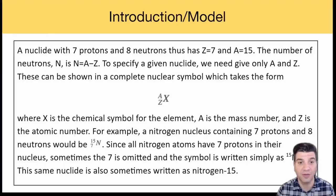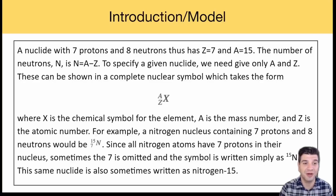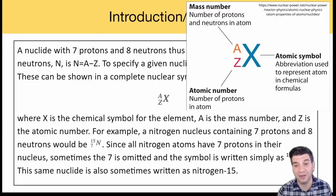A nuclide with seven protons and eight neutrons thus has a Z of seven and an A of 15. Remember, the Z represents the number of protons, the atomic number, which element it is—those are all the same thing. And A represents the mass number, which is just the number of protons plus the number of neutrons. The number of neutrons, N, is N equals A minus Z.